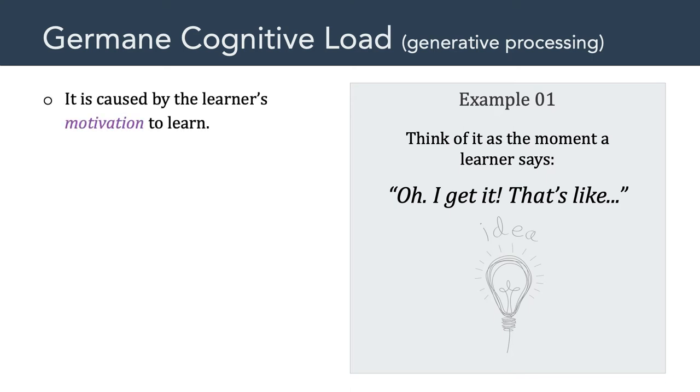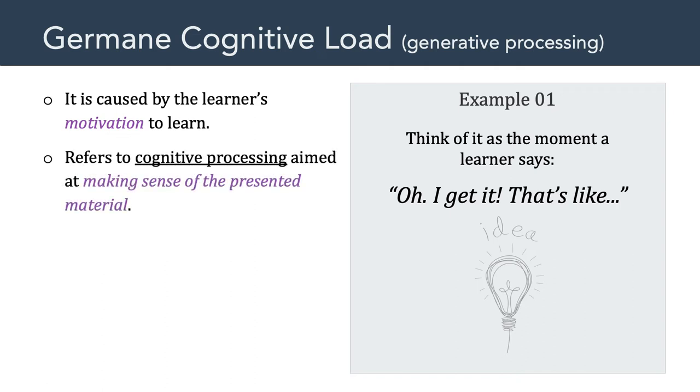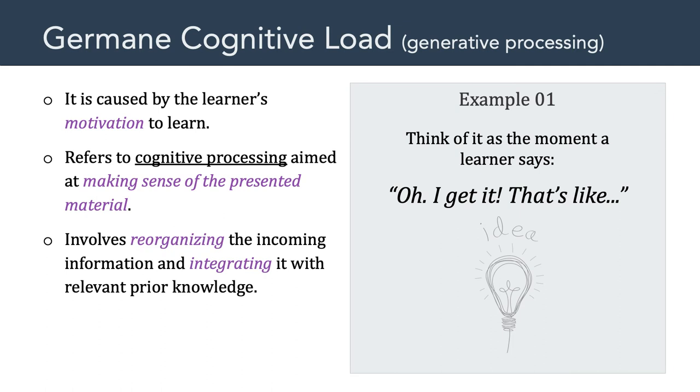Now, the third kind of cognitive load is germane cognitive load. And, this cognitive load is caused by the learner's motivation to learn. And, it refers to the cognitive processing aimed at making sense of the presented material. It involves reorganizing the incoming information and integrating it with relevant prior knowledge. In short, germane cognitive load results in the construction of an integrated mental model. And, one of the ways I like to think about it is when a student who says, Oh, I get it. That's like this.